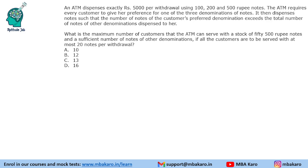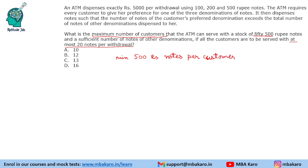Question 3: what is the maximum number of customers the ATM can serve with a stock of 5 notes of ₹500 and a sufficient number of notes of other denominations, if all customers are to be served with at most 20 notes per withdrawal? All customers should receive a maximum of 20 notes per withdrawal. We have 5 notes of ₹500 and need to serve the maximum number of customers, giving the minimum number of ₹500 notes per customer. Total notes must be less than or equal to 20.